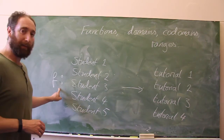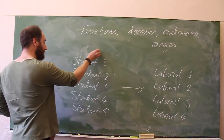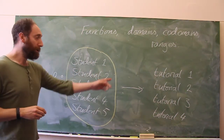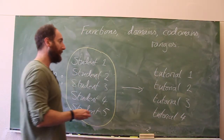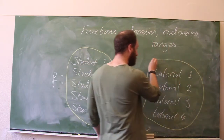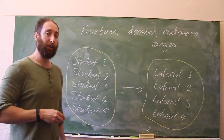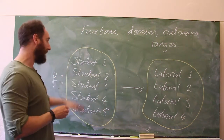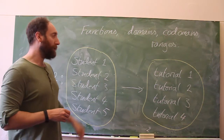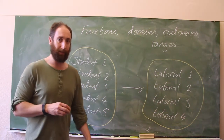For instance, we could have a function which maps us from the set of students — let's say we have five students — to the set of tutorial sections. Maybe we have four tutorial sections. So there are four possible tutorial sections and five possible students. As long as we don't have one student being assigned to multiple tutorials, we can define a function here.